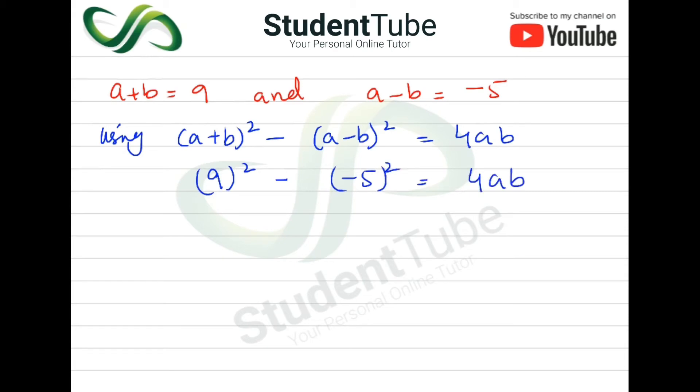Now 9 times 9 is 81. Minus 5 times 5 is 25. Now here 5 is on top 2, the exponent is 2. When the exponent is 2, the minus becomes plus. It becomes plus because 2 is an even number. So minus minus is plus. So 25 is equal to 4AB.